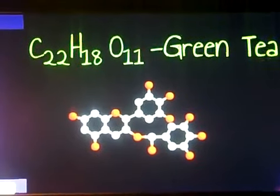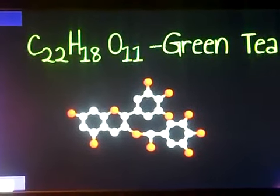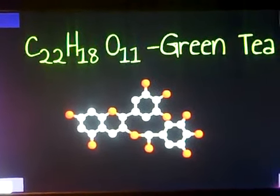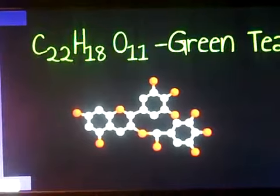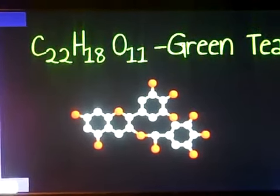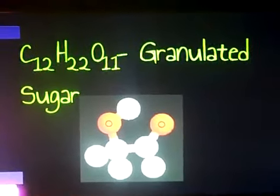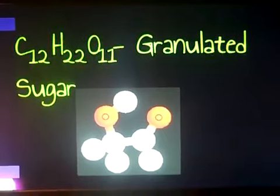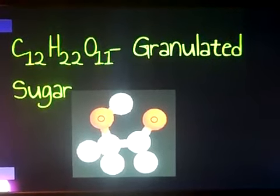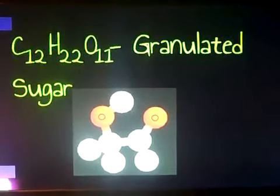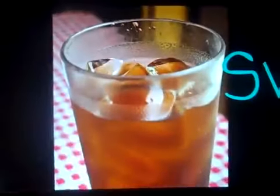To make green tea, you take 22 carbon atoms, 18 hydrogen atoms, and 11 oxygen atoms, plus granulated sugar, which is 12 carbon atoms, 22 hydrogen atoms, and 11 oxygen atoms. That will get you this amazing drink called sweet tea.